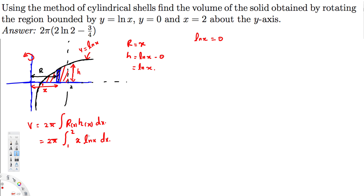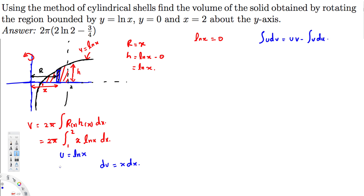We can't integrate x·ln x directly, so we use integration by parts: ∫u dv = uv - ∫v du. We pick u = ln x because it's hard to integrate but easy to differentiate, and dv = x dx. Then du = (1/x) dx, and v = x²/2.